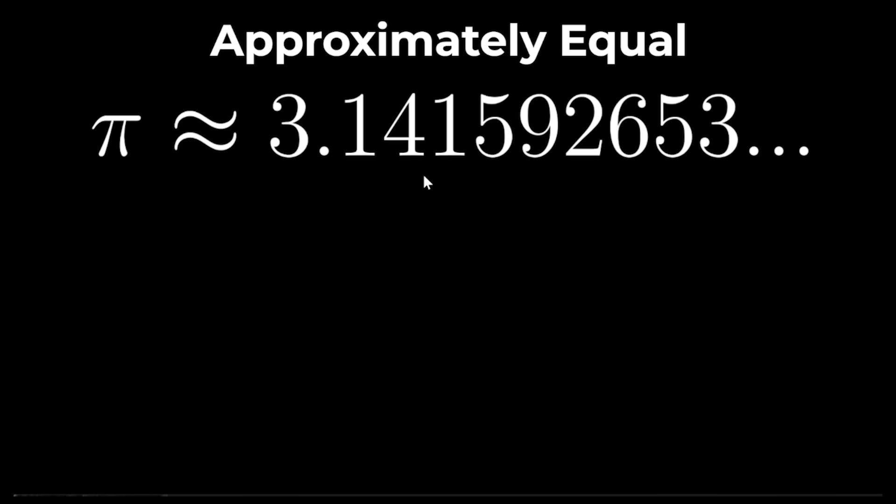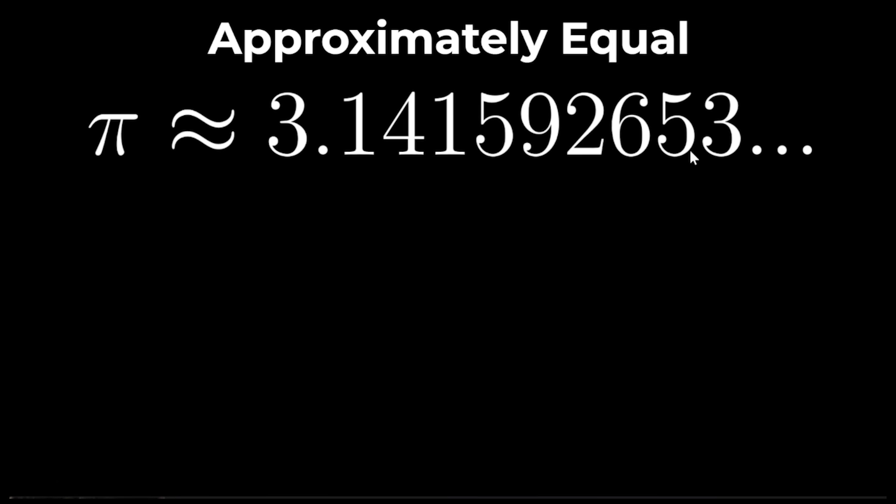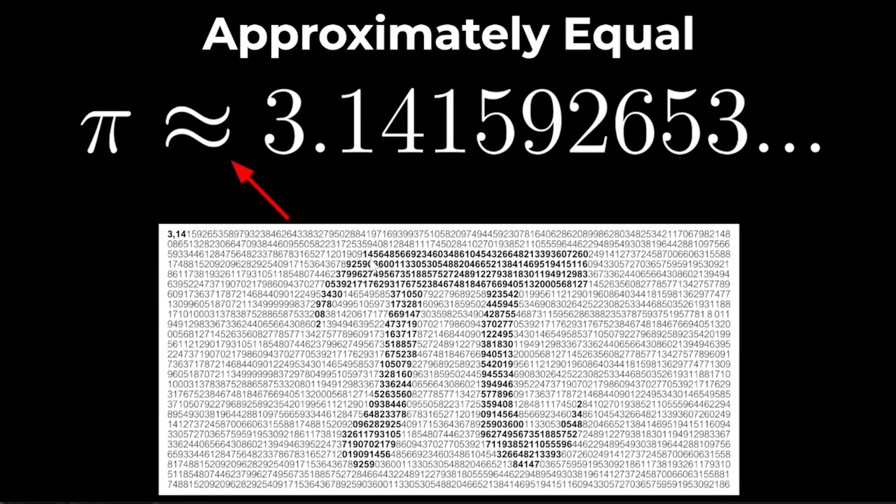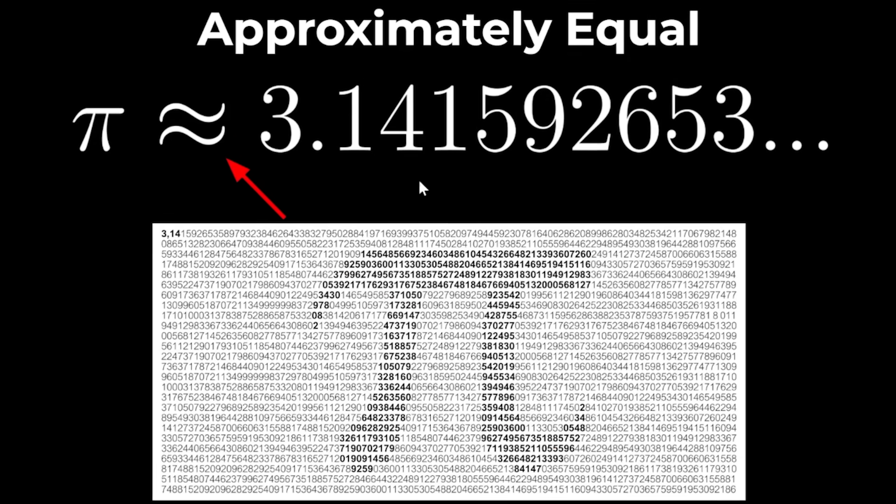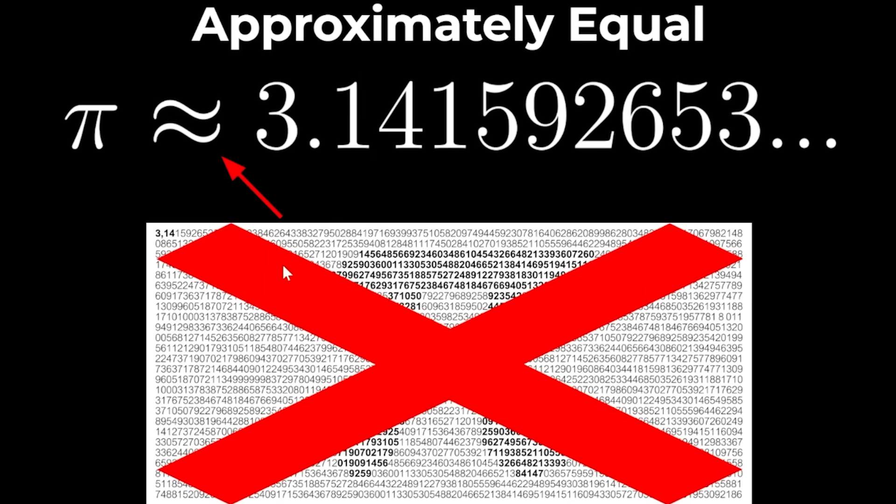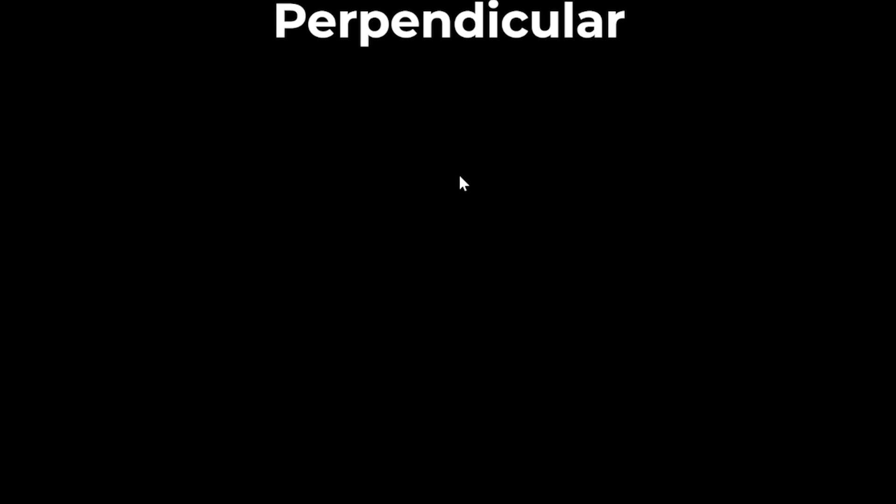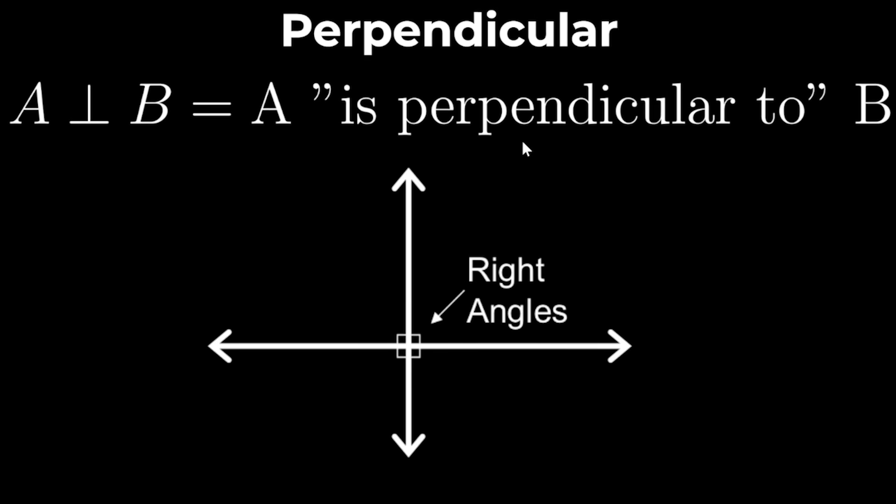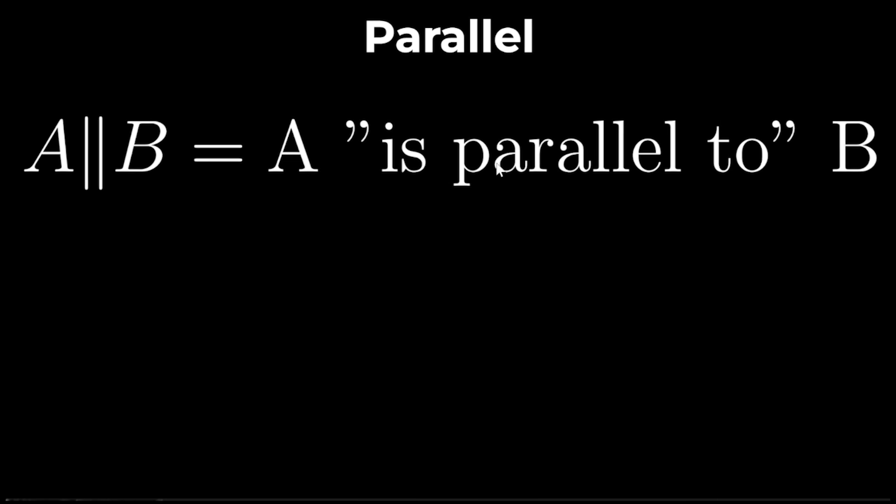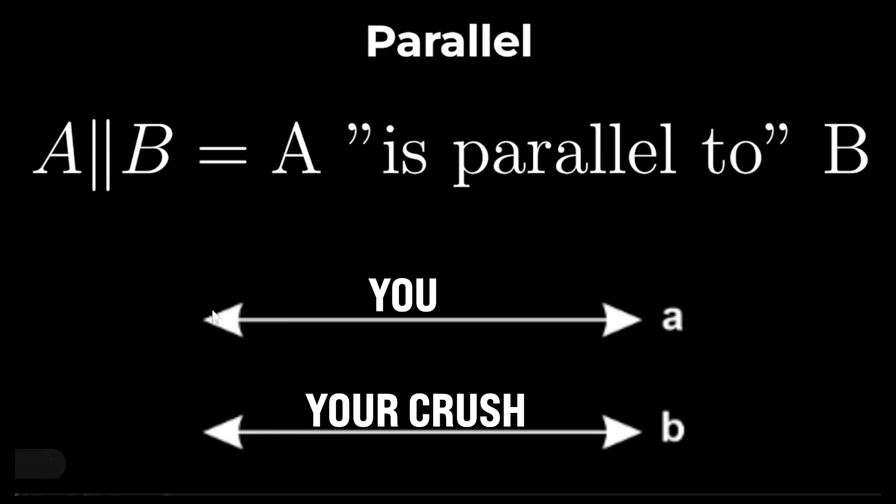Approximately equal: I actually already use this for my value of pi because no matter how many decimal places you add you can never actually write down the exact value of pi. It will only ever be approximately equal. Perpendicular: Two lines are perpendicular if they intersect at a right angle. Parallel: Two lines are parallel if they're in the same plane and never intersect no matter how far they extend.